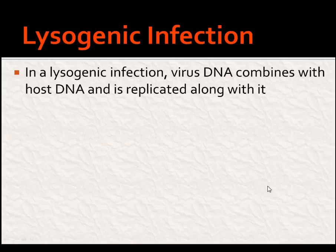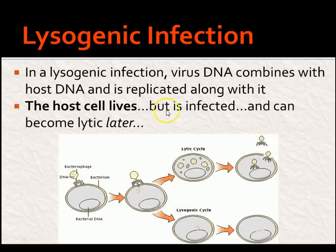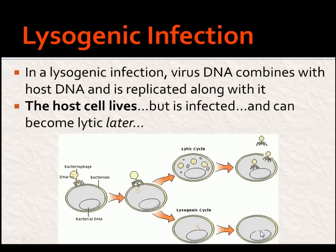Lysogenic infection, on the other hand, is a little different. In a lysogenic infection, the virus DNA combines with the host DNA and is replicated along with it. The host cell lives, but it's infected and can become lytic later. In the lysogenic cycle, the bacteriophage injects its DNA, but the DNA doesn't take over — it just sits and waits. This is something like herpes simplex virus, like a cold sore. You'll have that virus your entire life, but the DNA will just sit inside and wait for something to trigger it, like stress or UV light. Then it goes to the lytic route.